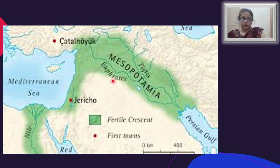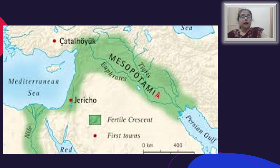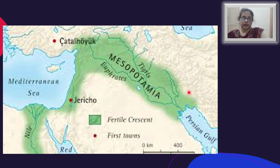In western Asia, the plains formed by the rivers Tigris and Euphrates supported a very important civilization. The Mesopotamian civilization had contact with the Indus Valley civilization — artifacts, seals, and other objects of the same type have been found in both places, indicating trade between the two civilizations nearly 3,000 years ago.